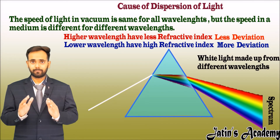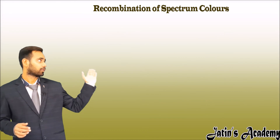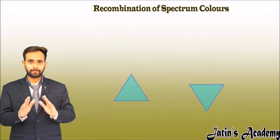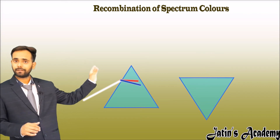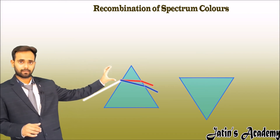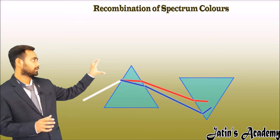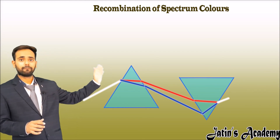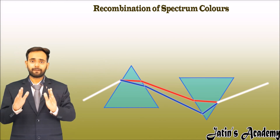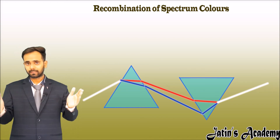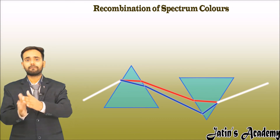Now pay attention to this experiment on recombination of the spectrum of light. When white light is passed through a prism, we get seven colors. These seven colors are then passed through an inverted prism, and we get white light again. This shows that white light disperses into seven colors, and when we combine these seven colors, we get white light back.